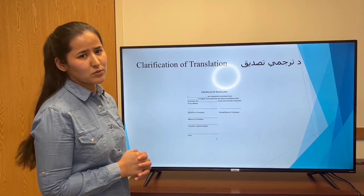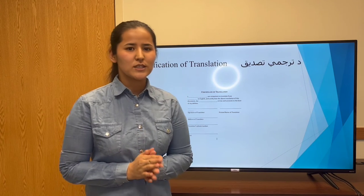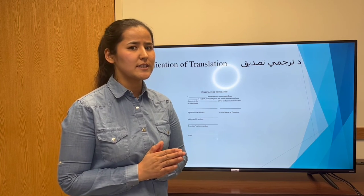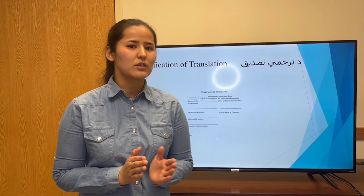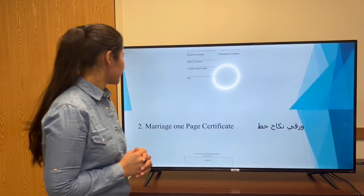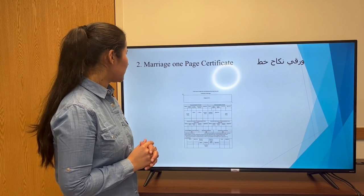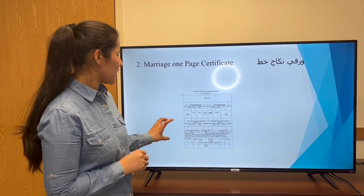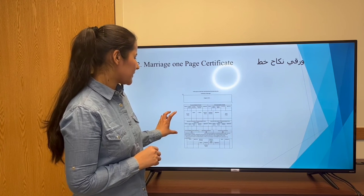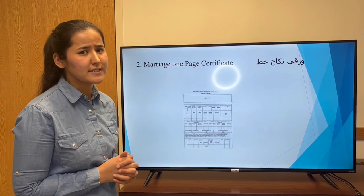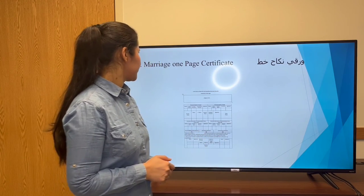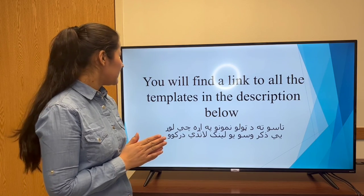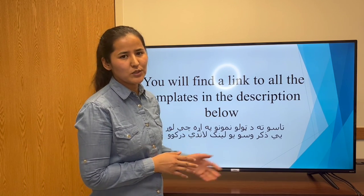Certification of translations: once done, the translator should certify that he or she translated all the documents exactly and in an accurate way. We also have a one-page marriage certificate, which contains basic information about the bride, bridegroom, and witnesses, and the translator should translate that from Persian to English. You can find the link and the template in the description below.